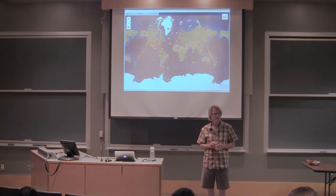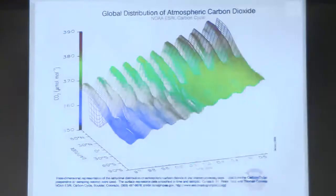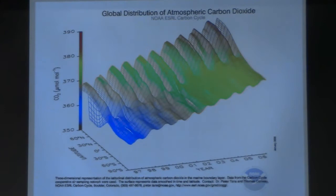There's a really interesting movie at this website that takes this data and runs it out over time—it's worth looking at. This is a picture of the sites in the NOAA global sampling network. From flasks collected at all these locations we have an understanding of the global pattern of carbon dioxide in the atmosphere. This is time from 1997 to 2006, latitude from south pole to north pole, and CO2 is the color and vertical axis.